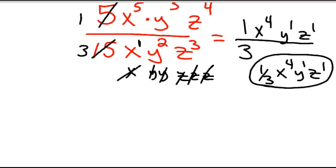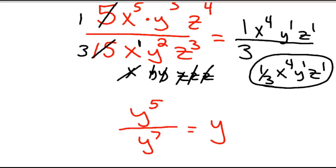The other thing that complicates it — and we're going to get into this in a couple of videos later — is what happens if you have something like y to the 5th over y to the 7th? If you use the rule, you get y to the negative 2nd power.